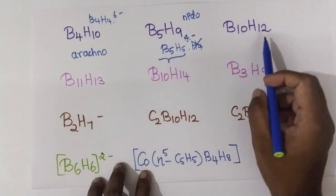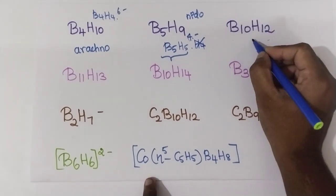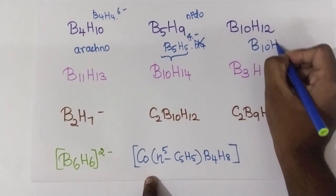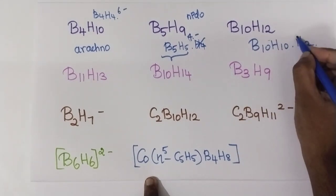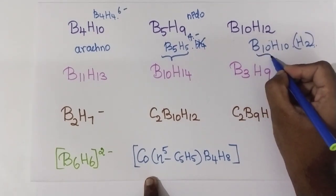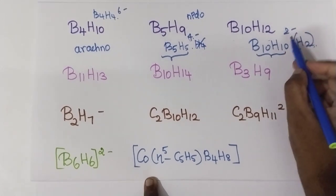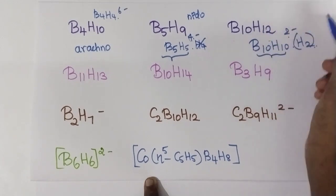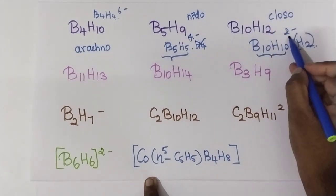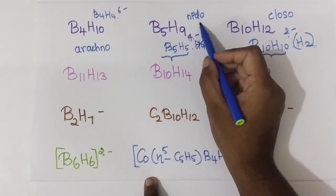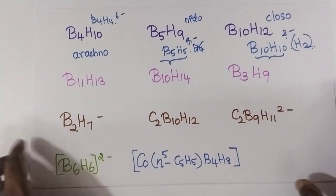Now here B10H12. You can write this as B10H10, then H2. So in BnHn format, you can write H2 as 2 minus. So 2 minus means closo borane. To summarize: 2 minus means closo borane, 4 minus means nido borane, and 6 minus means arachno borane.